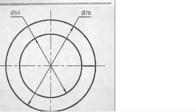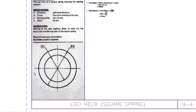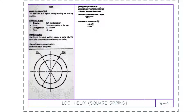Looking at the diagram, the maximum diameter is 78 and the minimum is 54. There's no shaft in the middle — it's actually hollow — and it rotates around the center. Before we start drawing, note that no height is given on the diagram, so you actually have to calculate it.